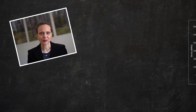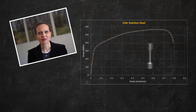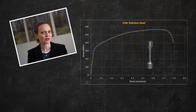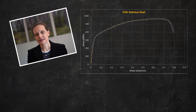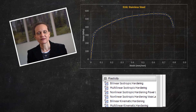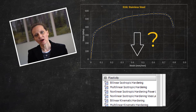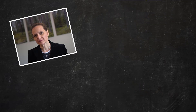Material suppliers sometimes provide uniaxial tension test data of the metals, which may cover its response from start to failure. This data can be used in defining the metal plasticity behavior, but one must know how to extract its information correctly.